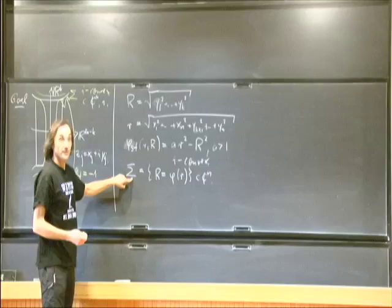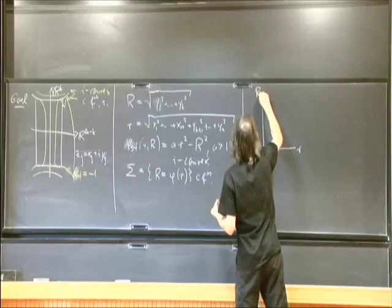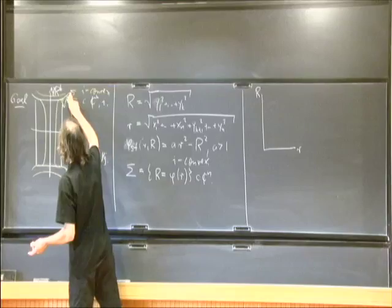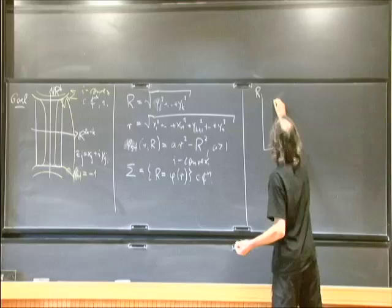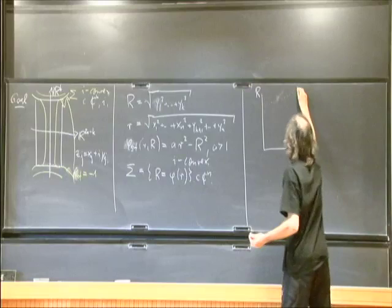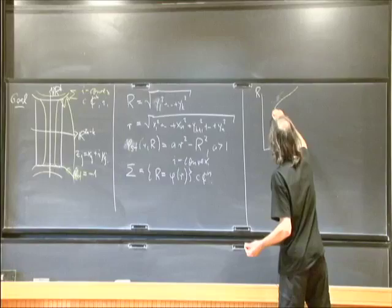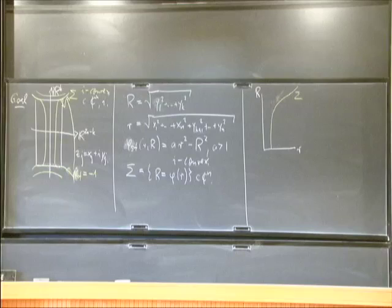If I draw this just in coordinates r and capital R, I want to construct a hypersurface which in the upper quadrant looks like the standard quadratic function. So it should match this one down here, then deviate and bend down. When I say it is a graph, it will actually become vertical — the slope becomes infinity. This is what this hypersurface should look like.